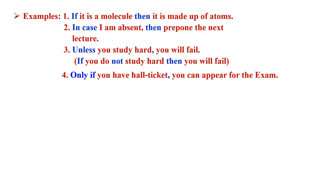Let us take a few examples. First: 'If it is a molecule, then it is made up of atoms.' Here, 'if...then' is the truth functional connective, 'it is a molecule' is the antecedent, and 'it is made up of atoms' is the consequent. Second example: 'In case I am absent, then prepone the next lecture.' Here, 'in case...then' is the truth functional connective, 'I am absent' is the antecedent, and 'prepone the next lecture' is the consequent.